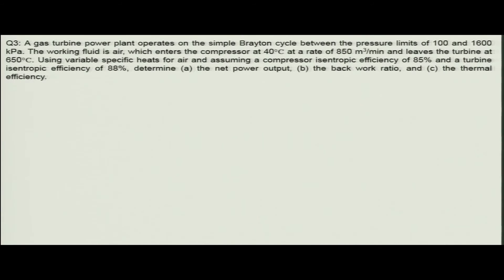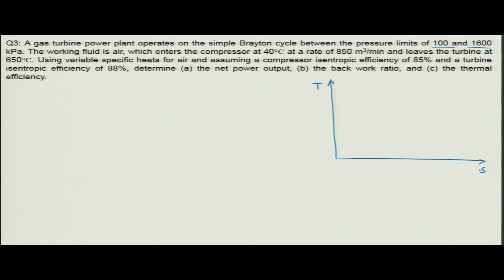The pressure limits are given: lower pressure is 100 kPa and higher pressure is 1600 kPa. The working fluid is air which enters the compressor at 40 degree centigrade. We will draw the T-s diagram where 1 to 2 is the compressor process.